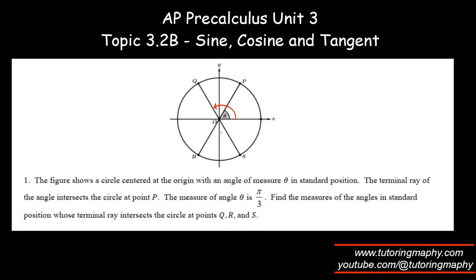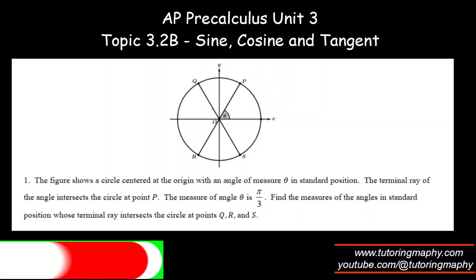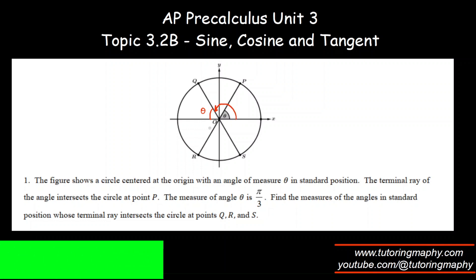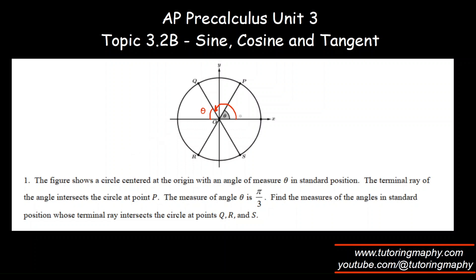Let's do it step by step. If you understand the first one, everything that follows is very easy. Can we agree that this is also theta because these are all symmetric? So this is also theta. Now notice that we need to find the terminal angle for Q. This entire angle here — isn't that 180 degrees? In radian world, can we say this is π? So if from this entire angle π I take away theta, I'll be left with only what I need.